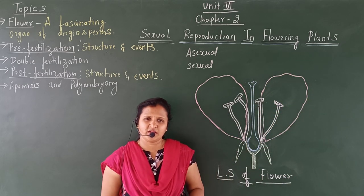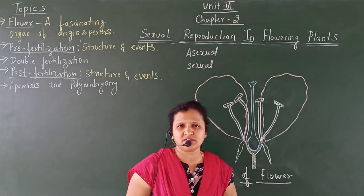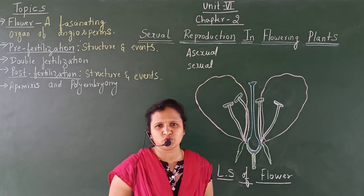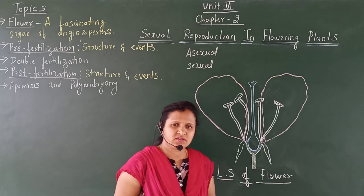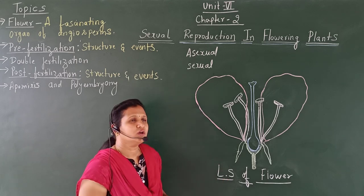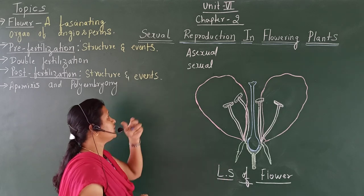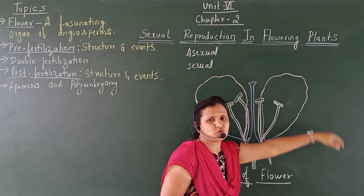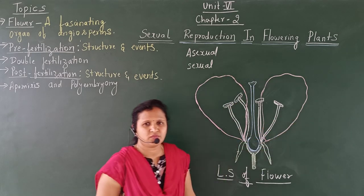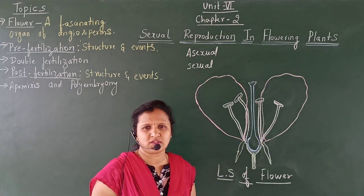Flowering plants are a group of plants — the angiosperms — which produce flowers. And hence here we will be discussing sexual reproduction in angiosperms.